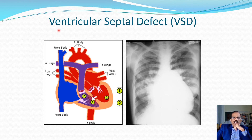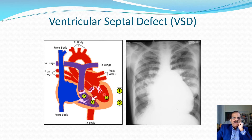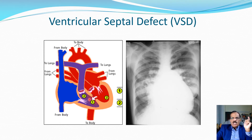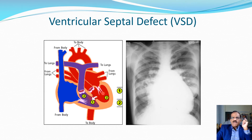Let's take up ventricular septal defect. Normally our intraventricular septum is an intact structure with no communication between the two ventricles, but if there is a defect, there will be abnormal flow of blood. If there is abnormal communication between two sides, blood will always flow from left to right unless there is additional outflow obstruction to the right. In VSD there is no additional abnormality, so blood flows from left to right — this is why we call it a left-to-right shunt.